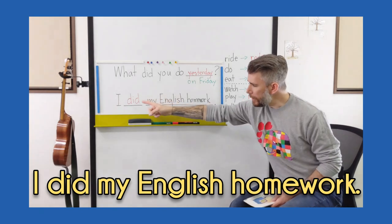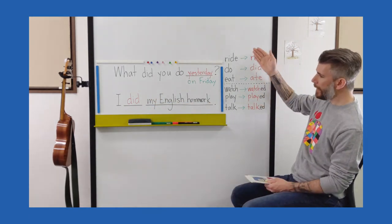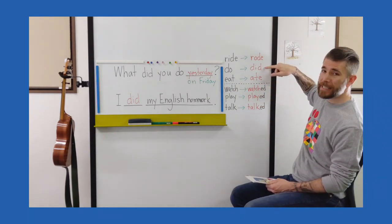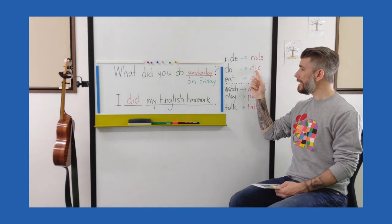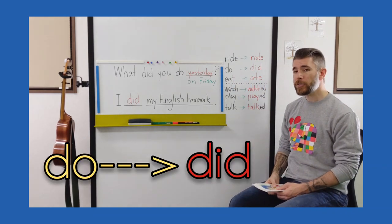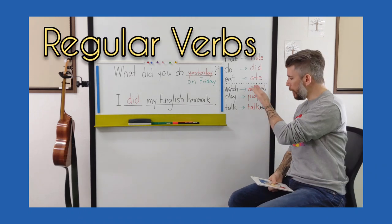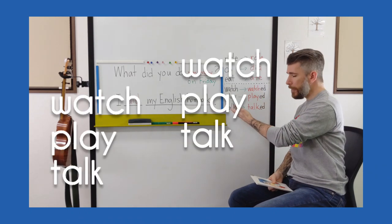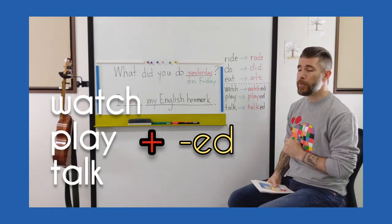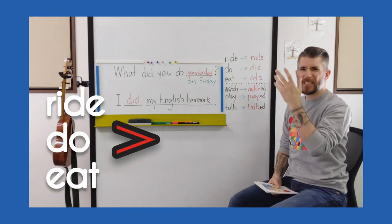Now I want to focus here on the word "did." Did is the past tense of do. In English, we have two kinds of verbs: we have regular verbs that end in -ED, and then we have irregular verbs where they change the spelling.